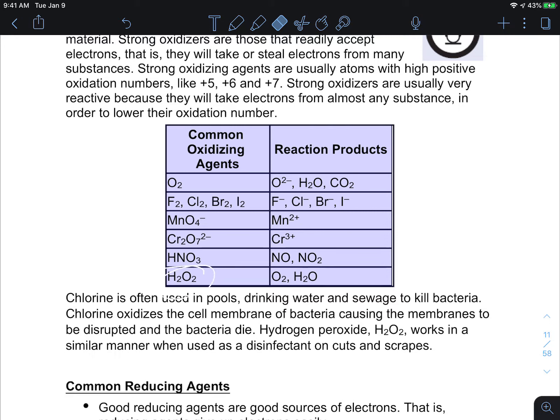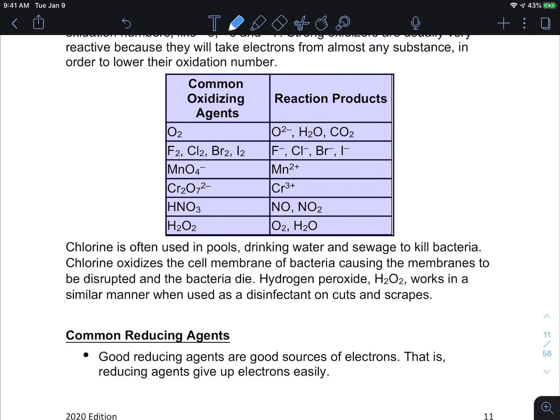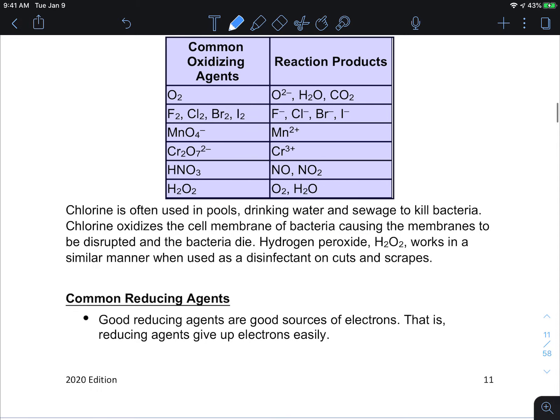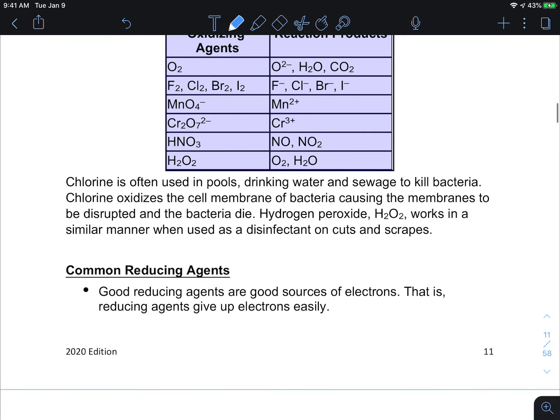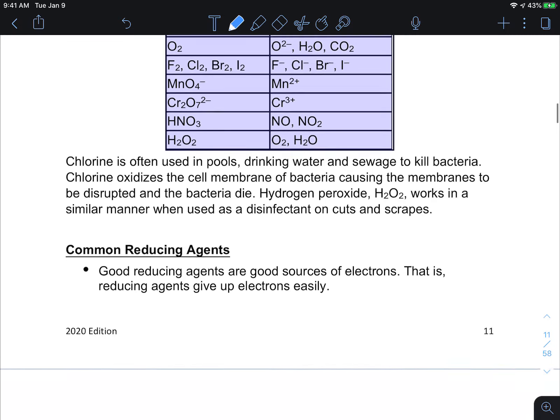If you've ever seen the elephant toothpaste experiment, that is also another example of a strong oxidizing reaction caused by a peroxide which are also incredibly powerful oxidizers. Often if you're dealing with a stain in clothing the way that you'll remove that stain is through oxidation and that's where chlorine oxidizers and bleaches all function, by oxidizing the stain and removing its coloring properties.